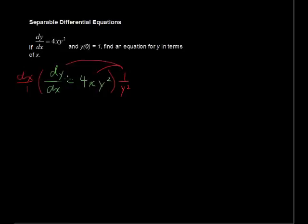So let's see what happens. On the left-hand side, we have 1 over y squared dy, and on the right-hand side, we have 4x dx.